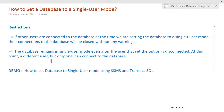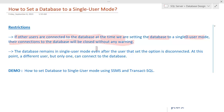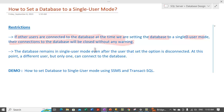There are certain restrictions that apply. If other users are connected to a database at the time we are setting it to single user mode, the connections to the database will be closed without any warning. Whenever we set a database to single user mode, the connections for those users will drop immediately. You need to warn them via some external means to make sure they are informed prior to taking the database into single user mode.